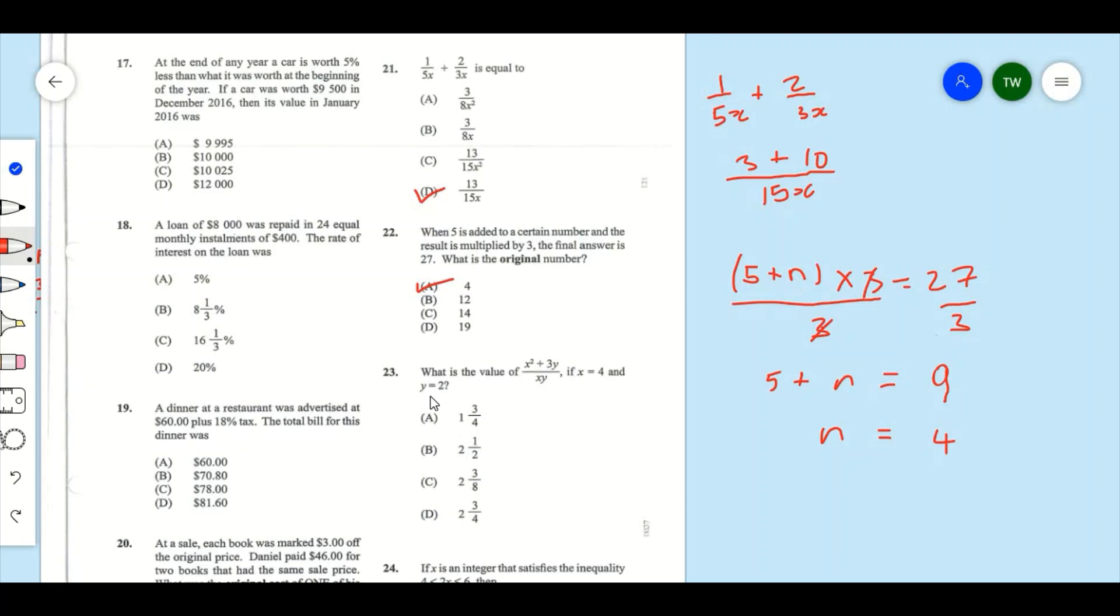Now to question 23: What is the value of x squared plus 3y, all divided by xy, if x is equal to 4 and y is equal to 2? Wherever you see x, you're going to put 4, and wherever you see y, you're going to put 2. So this is going to be 4 squared plus 3 times 2, all divided by 4 times 2.